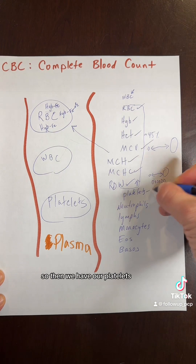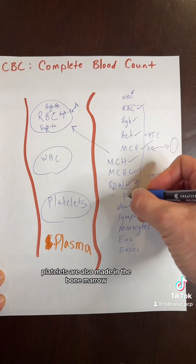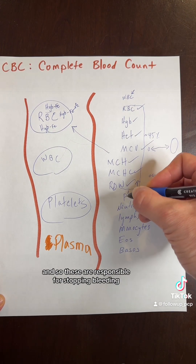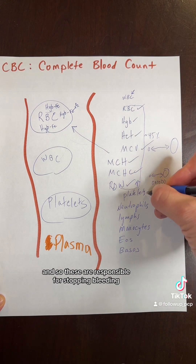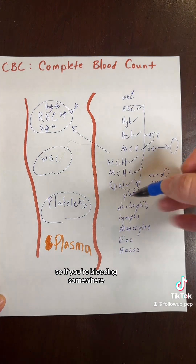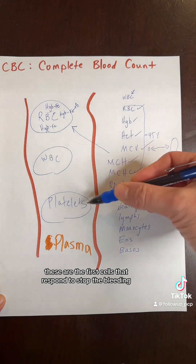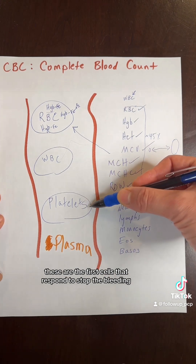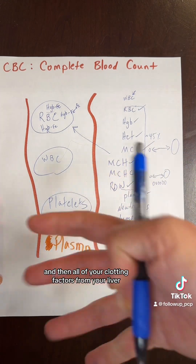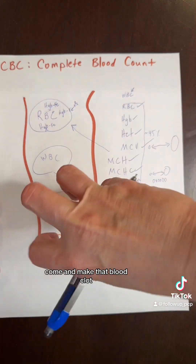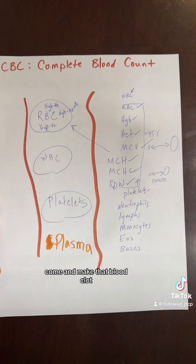Platelets are also made in the bone marrow and are responsible for stopping bleeding. When you're bleeding somewhere, these are the first cells that respond to stop the bleeding, and then all of your clotting factors from your liver come and make that blood clot.